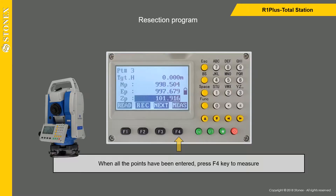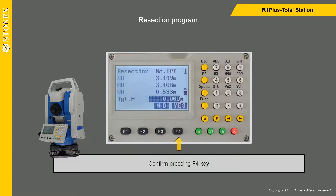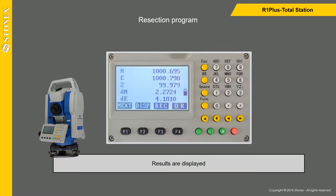When all the points have been entered, press the F4 key to measure. Aim at the first point and press the F1 key to measure it. Confirm by pressing the F4 key. After finishing all measures, press the F1 key to compute the results. Results are then displayed on screen.